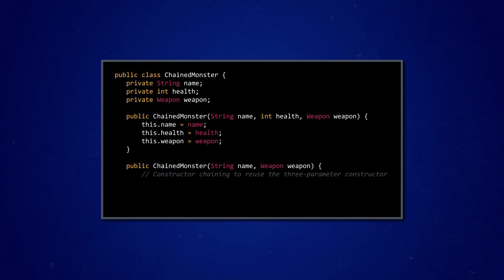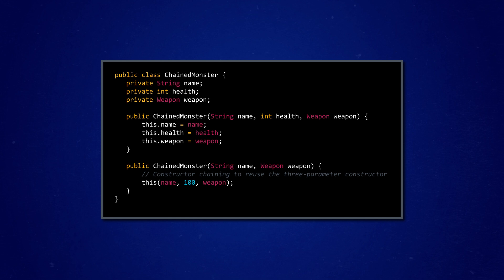The best way to fully understand a new concept in Java is by trying it out. So let's create a chained monster class to test out constructor chaining. We have two constructor methods, both declared using public ChainedMonster. This syntax should look familiar, because it's also what we use to declare unchained constructor methods. The first constructor method is our 3PC, because it takes all three arguments that define each chained monster object: name, health level, and weapon. In this constructor, we directly set all of the parameters as usual.